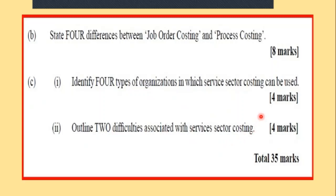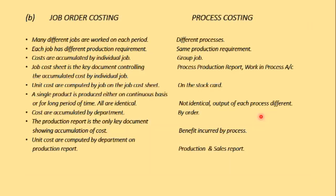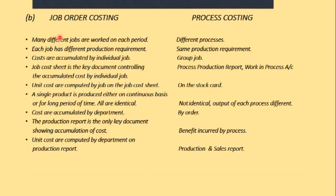This part is more of a reading exercise that you can find in your textbook, but let's take a look at the differences between costing methods. In job order costing, there are many different jobs worked on each period, whereas in process costing it's the same product but going through different processes.